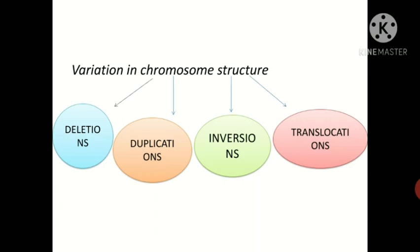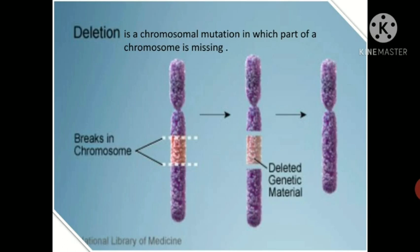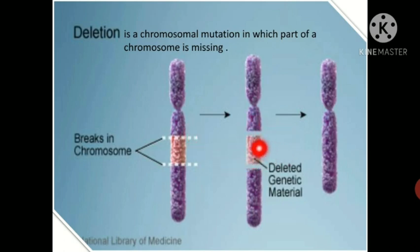The first type is deletion. Deletion is a chromosomal mutation in which part of a chromosome is missing. A deletion starts where the break occurs in the chromosome. Breaks can be induced by agents such as heat, radiation, viruses, and chemicals. Because a segment of chromosome is missing, a deletion mutation cannot revert to the wild-type state.